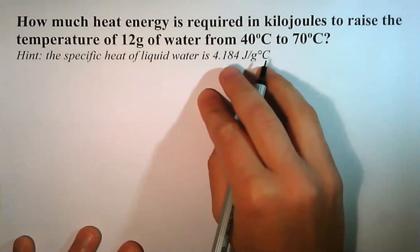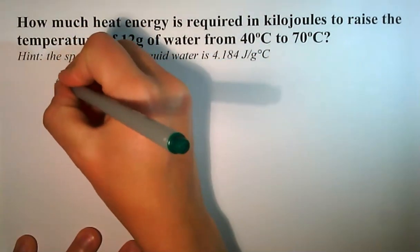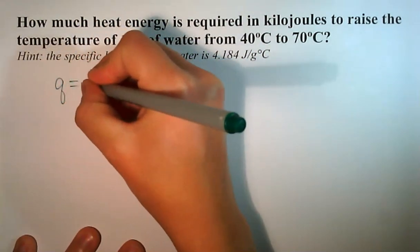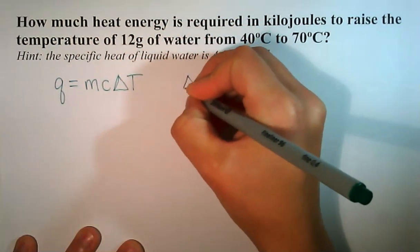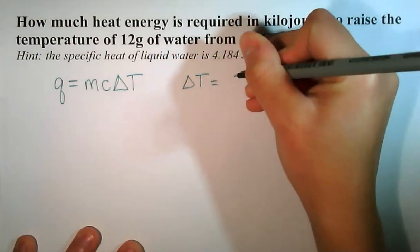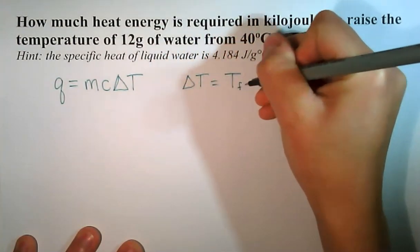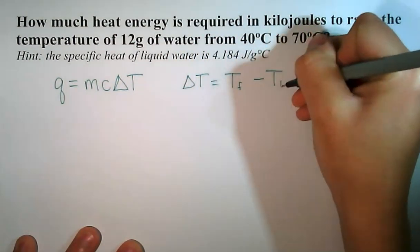We're going to use our equation Q equals M times C times delta T. And delta T is equal to the final temperature minus the initial temperature.